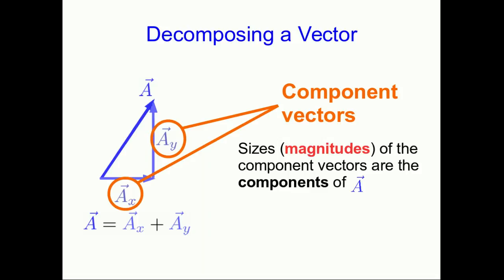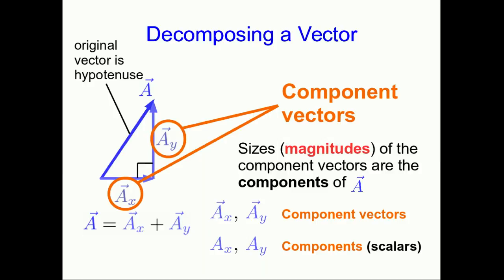Don't mix up components with component vectors. The component vectors are two vectors which add up to vector a. The components are the sizes — the magnitudes — of those two vectors, so they're scalars. You can think of them as the lengths of the sides of the right triangle this drawing shows. That triangle must be a right-angle triangle because ax and ay point parallel to our axes, which are perpendicular to each other. Whenever you decompose a vector, the original vector must be the hypotenuse — if it isn't, you've done the decomposition wrong.